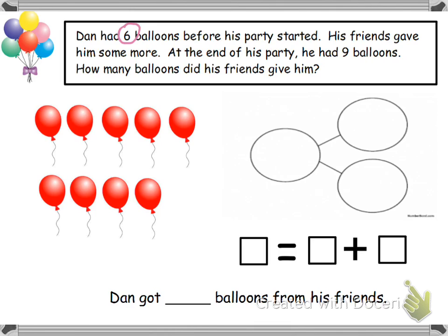Okay, so we circled our numbers, which is six balloons before his party and the nine balloons at the end of the party. Now we're going to underline the question, which is how many balloons did his friends give him? And now we're going to box in important words. So I know that Dan had six balloons, so we know that we need to put balloons because we wouldn't know what that is — we didn't know if that was monkeys or crayons or pencils.